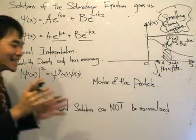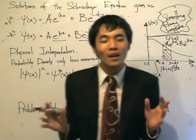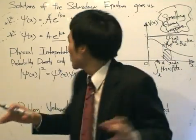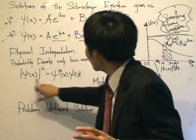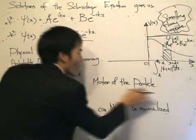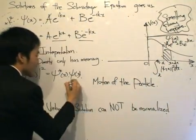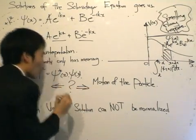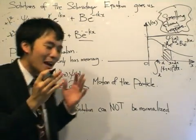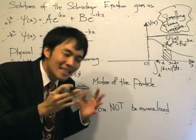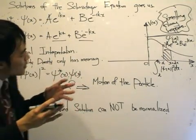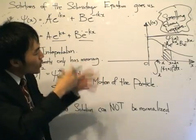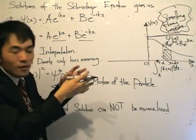This is the pinnacle point of all our lessons: how do we consolidate the probability density with the motion of the particle? This is where many students have a hard time understanding — if the position of the particle is given by probability density, what do we say about the motion of the particle?